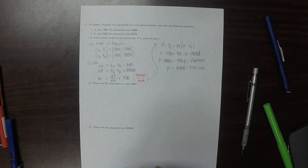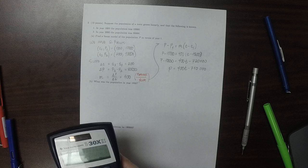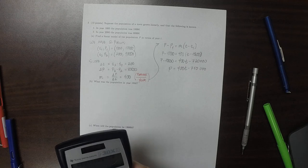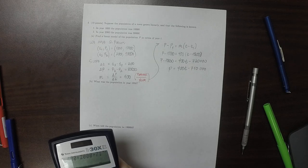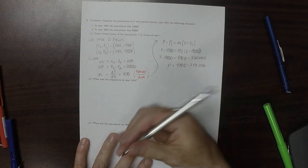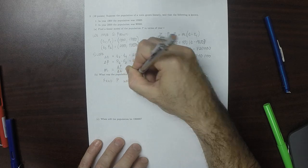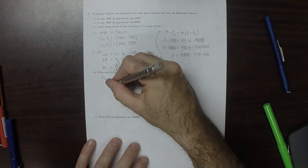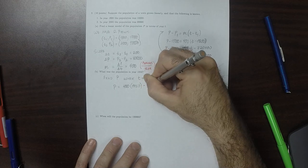So let's make sure that that's reasonable. If I plug in 1800, then I should get 10,000. So 400 times 1800 and then minus 710,000 is 10,000. Good. And then now if I plug in 2000, I should get 90,000 and I get 90,000. So that looks good. What was the population in 1950? So this is saying find P when T is 1950. So P is 400 multiplied by 1950 and then minus 710,000.